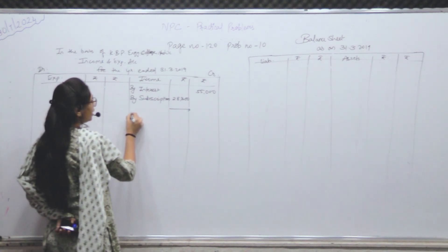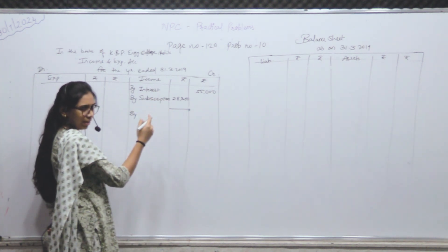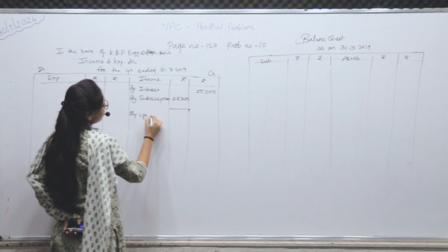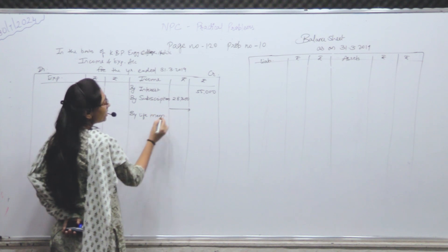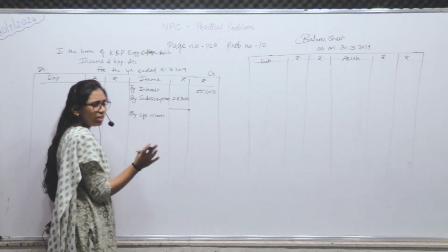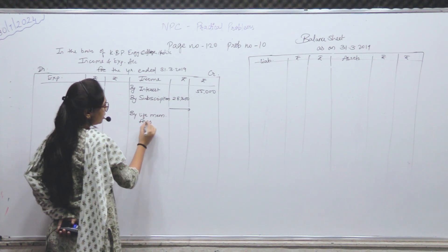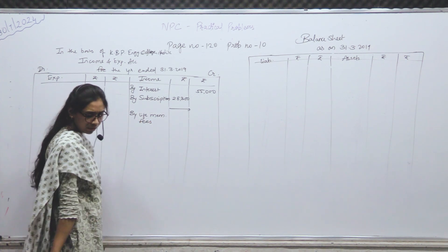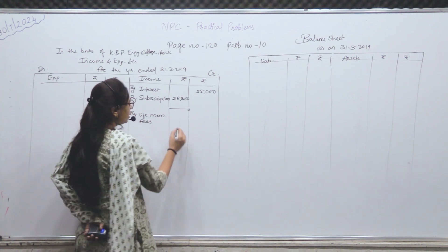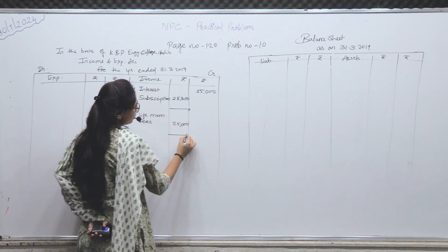Life membership fees — यहाँ लिखकर, less करके वहाँ भेजना है। By life membership fees — directly capital में भी add कर सकते हो — कोई दिक्कत नहीं है। Amount: 25,000।